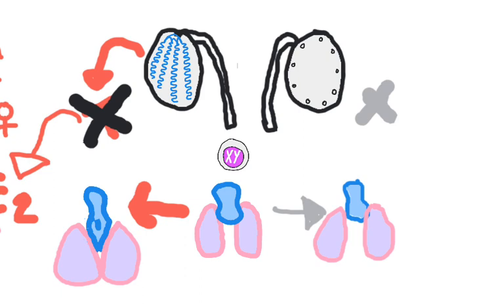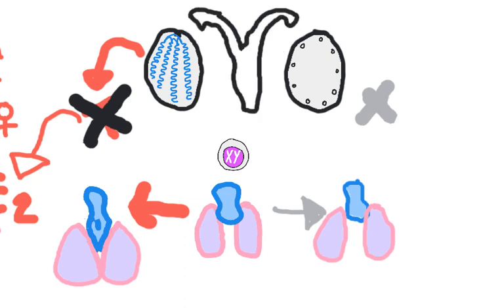Conversely, the absence of testosterone allows the Wolffian ducts to degrade, but the Mullerian ducts survive to turn into the fallopian tubes and the uterus. These are the only two structures that do not have homologues between males and females.